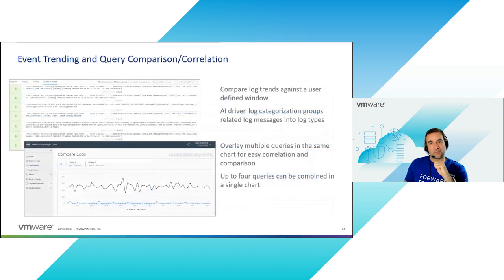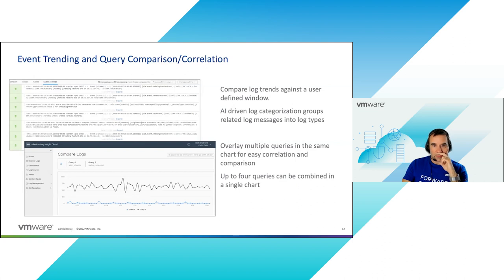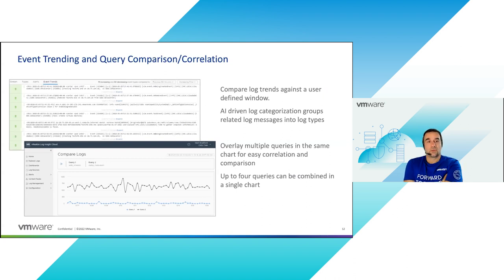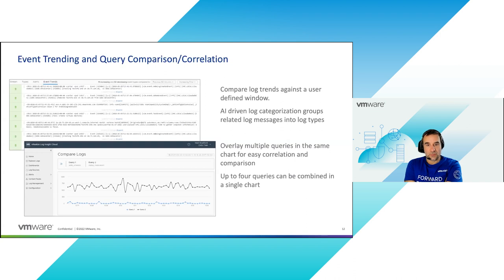Digging deeper into log exploration, we have two key features. First, event trending: you can trend logs over the last five minutes, then compare that with the previous 15 minutes to see if a particular log type is increasing — a signal that something is happening. Second, the ability to compare different logs: you can overlay multiple queries on top of each other in the same chart. For example, you can correlate a storage issue on an ESXi host by stacking two queries together. Up to four queries can be stacked, which is very useful for correlating different events.